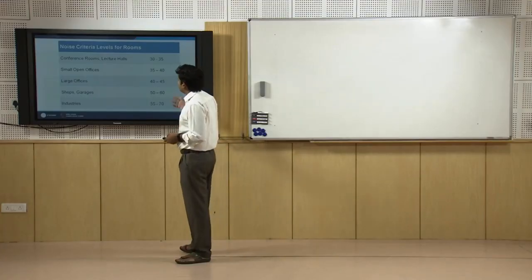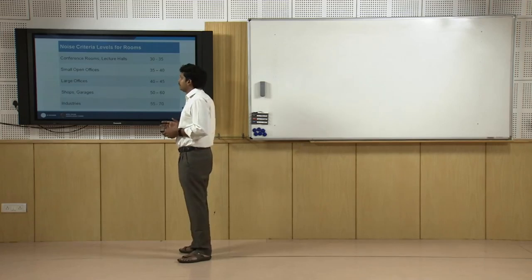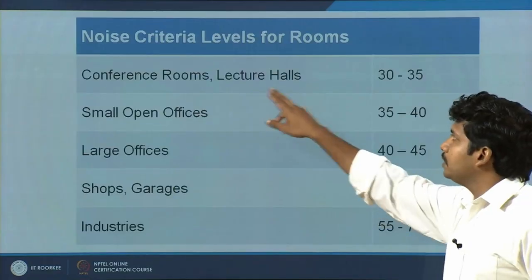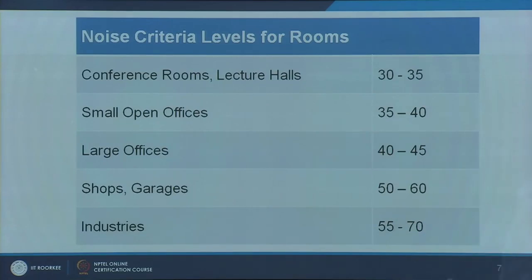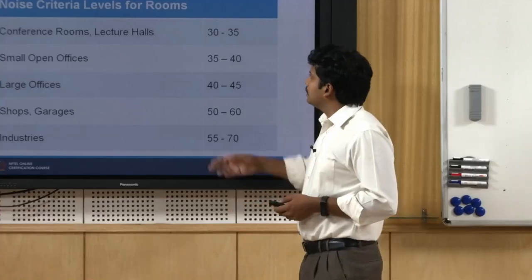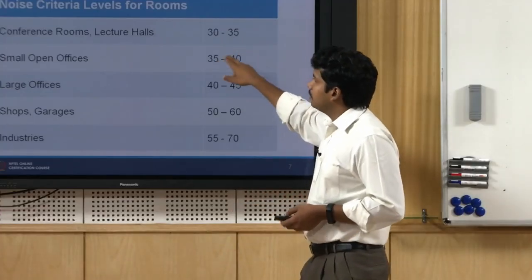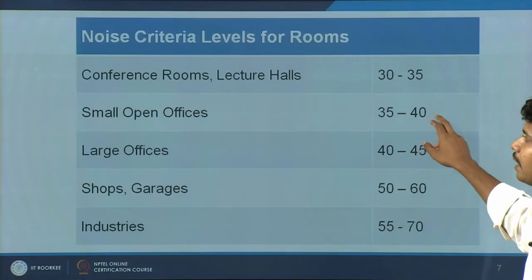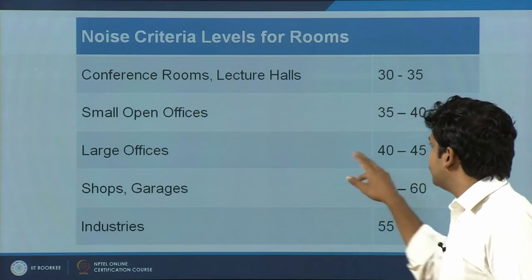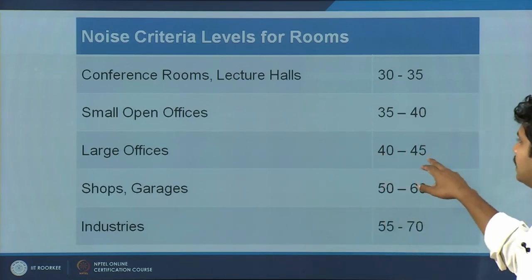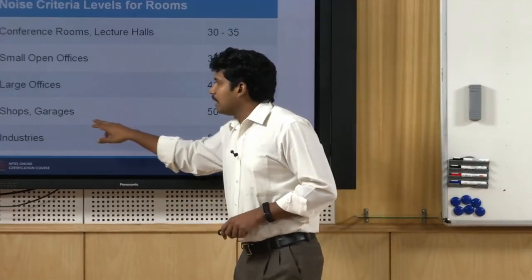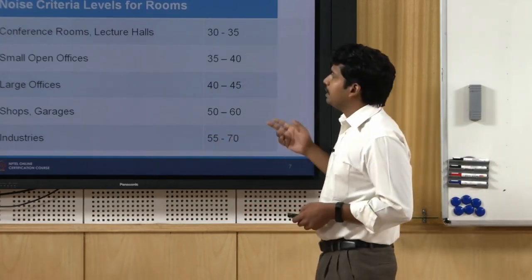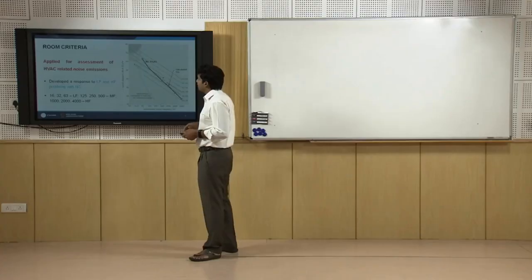There are different standards defining commonly accepted NC values. Conference rooms or lecture rooms: NC 30 to 35. Small open offices: NC 35 to 40, which also includes private cabins. Large offices can go up to NC 45. Shops and garages are higher still, and industries can go as high as NC 70.